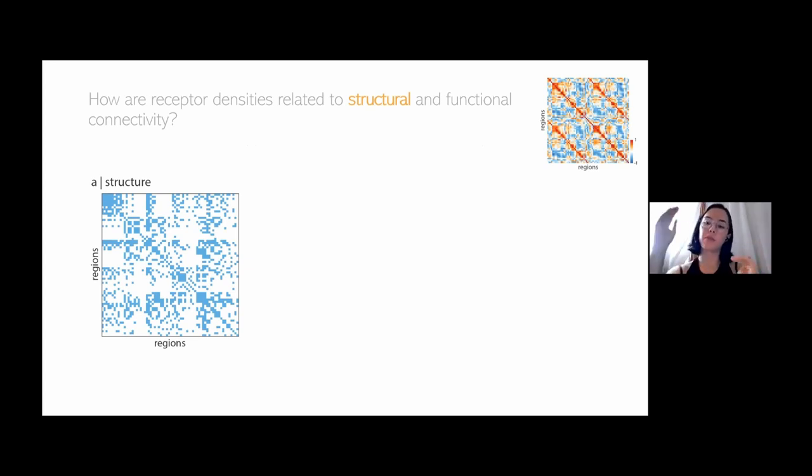We asked some really simple questions. For example, are brain regions that are structurally connected more likely to have more similar receptor fingerprints? We find that was the case. That's interesting and maybe not so surprising because if you have similar receptor distributions or receptor fingerprints at the brain region, then you're probably firing similarly and therefore synapsing with one another.